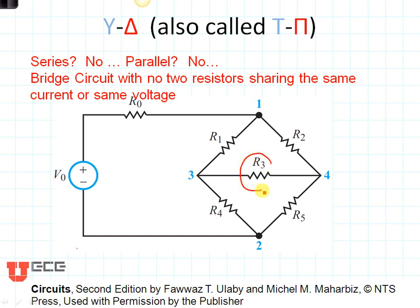In fact, R3 is a bridge resistor between the two series arms, R1 and R4, and R2 and R5. So this is a bridge circuit. No two resistors have the same current, and no two resistors have the same voltage, so this circuit is neither series nor parallel.